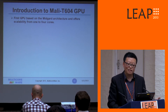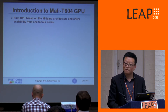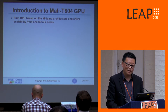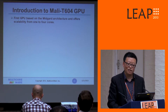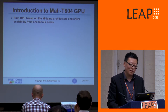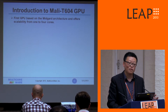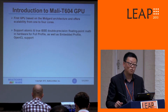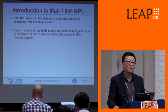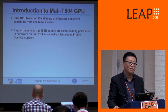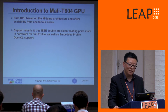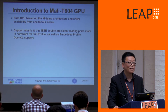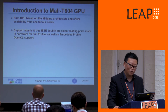The Mali T604 GPU is our first GPU based on the Midgard architecture. It allows you to scale from one to four cores of GPU power. It supports atomics and also true IEEE double-precision floating-point mathematics. Of course, it also supports OpenCL, which is very important for GPU compute.